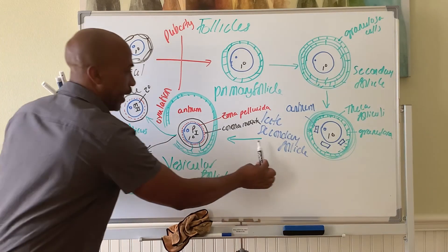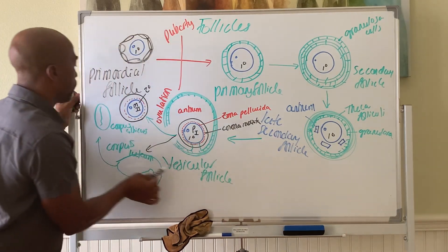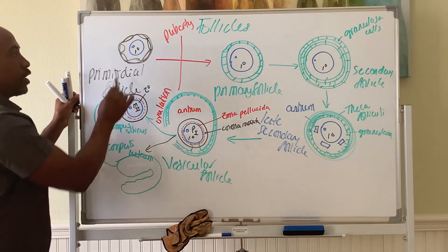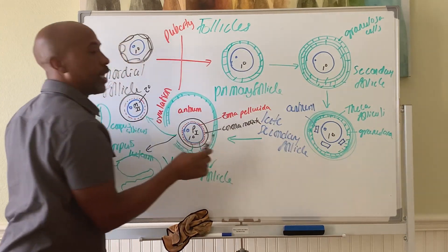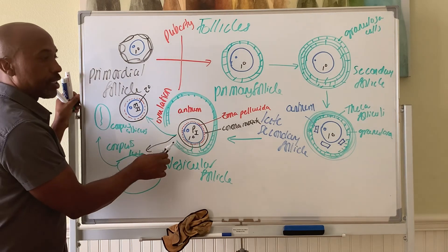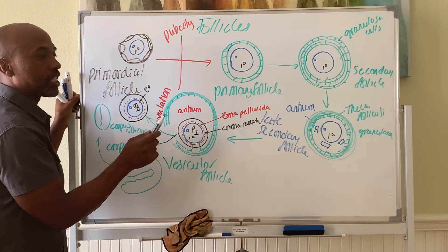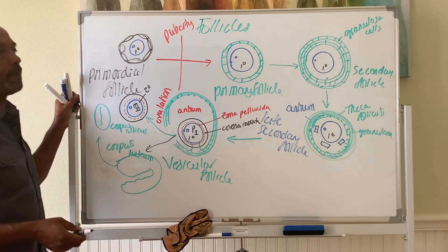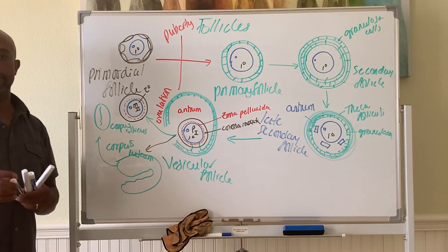And this process here from late secondary follicle to the point of becoming corpus albicans happens monthly. But this one happens over a year. So the follicle that ruptures actually began the process a year ago before you got to it in your monthly cycle. So that is follicle development.